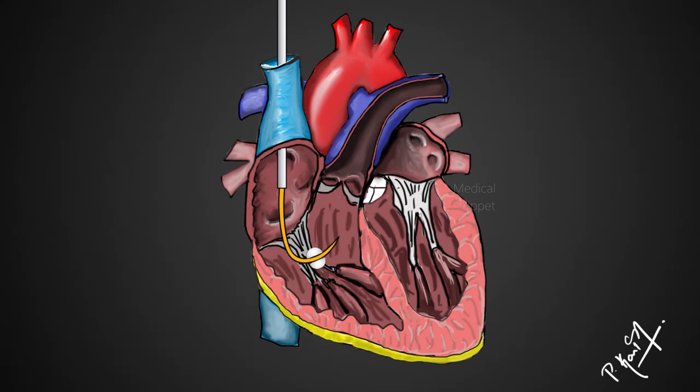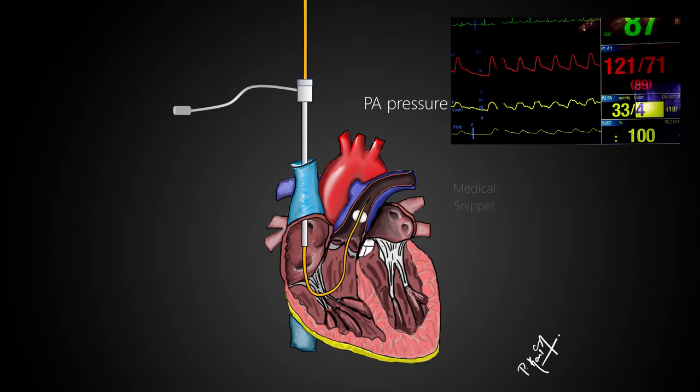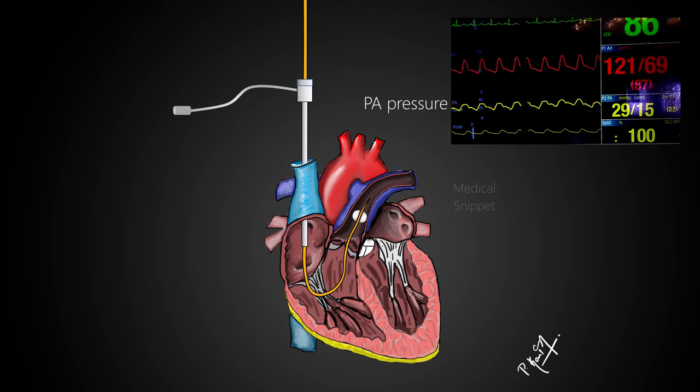When the catheter tip reaches the pulmonary artery, the systolic pressure is similar to the right ventricular systolic pressure, but there is an increase in the diastolic pressure to about 10 mmHg. It is due to the closure of the pulmonary valve during diastole.